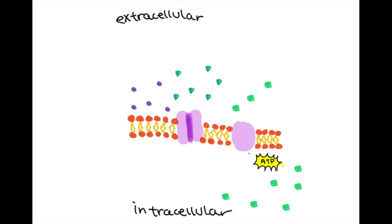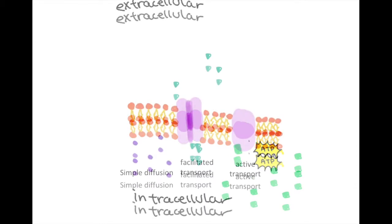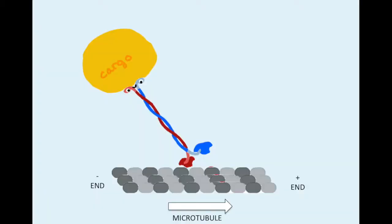Molecules can enter the cell through different means, such as simple diffusion down a concentration gradient, through facilitated transport such as glucose entering the cell by GLUTs, or active transport, which involves going against a concentration gradient with ATP as a cost. But how do larger things get around a cell? We can answer that by looking at motor proteins, such as kinesin.